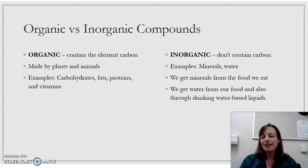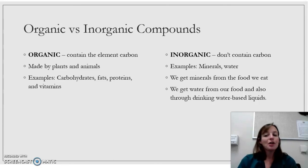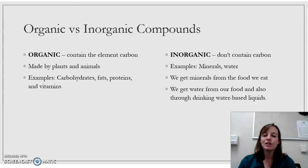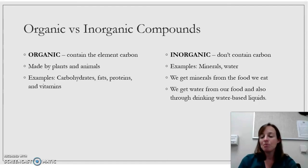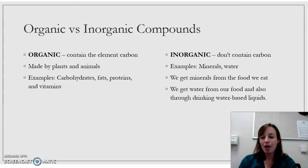There are two words you'll see a lot both in popular culture and in science: organic and inorganic. There are two definitions of organic — one definition just means does it contain the element carbon? Organic applies to carbohydrates, fats, proteins, and vitamins — those four are considered organic. Inorganic means they don't contain carbon; examples are minerals and water. For example, sodium chloride — salt. You need salt to function, but you can't get calories from it. Salt provides different nutritional benefits for us, and we get minerals and water from our food.